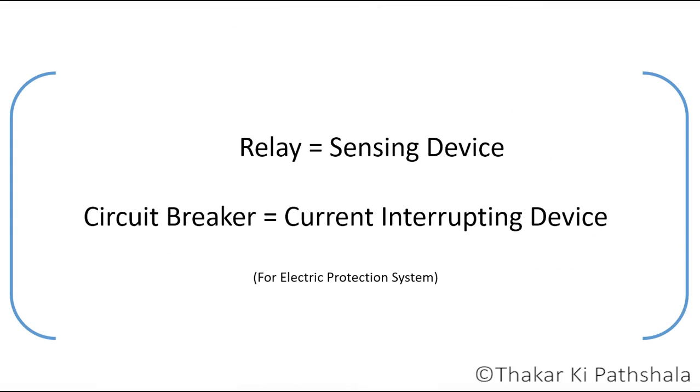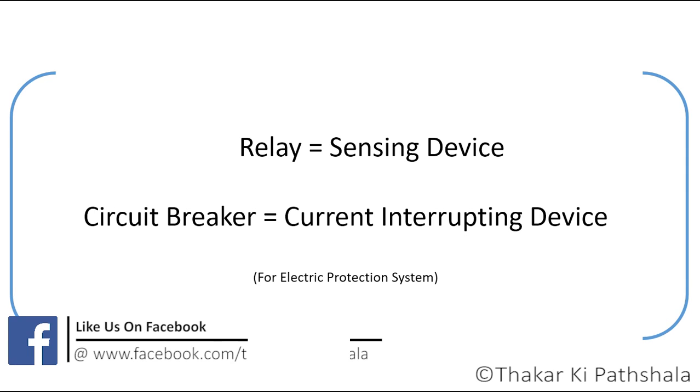So if we conclude the content of this whole video in one line: for an electrical protection system, relay is the sensing device, and the circuit breaker is simply the device which makes or breaks the circuit.